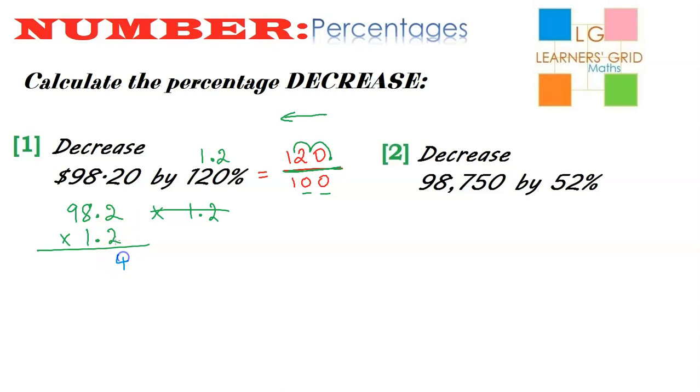2 times 2 is 4. 2 times 8 is 16. Carry that one. 2 times 9, that's 18, plus that one I just carried is 19. So I'm finished with that. Hold the place. I'm now up to 1. 1 times 2, that's 2. 1 times 8 is 8. And 1 times 9 is 9.